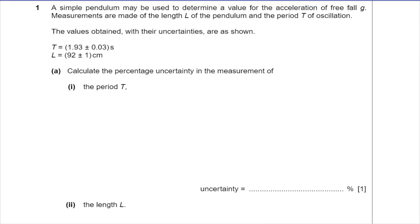This question says a simple pendulum may be used to determine a value for the acceleration of free fall g. Measurements are made of the length L of the pendulum and the period T of oscillation. The values obtained with the uncertainties are: T = 1.93 ± 0.03 seconds and L = 92 ± 1 centimetres.